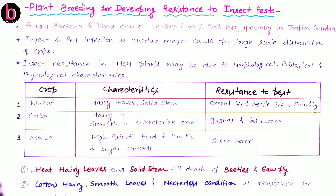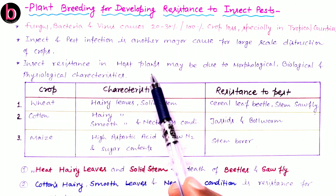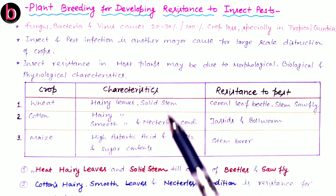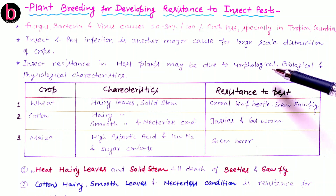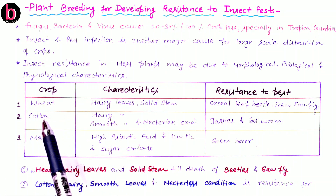When we discuss insect resistance in any host plant, this may be mainly because of morphological, biochemical, or physiological characteristics. There are a number of examples given in NCERT and here we will discuss them one by one.